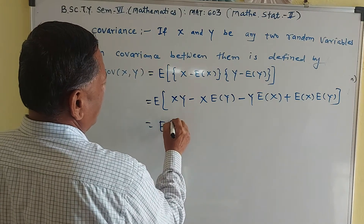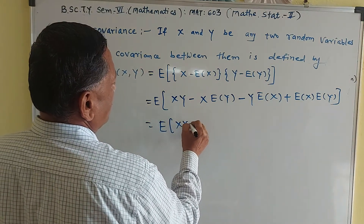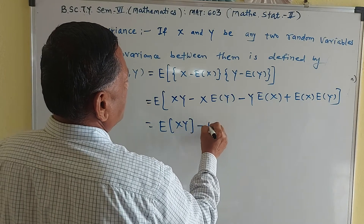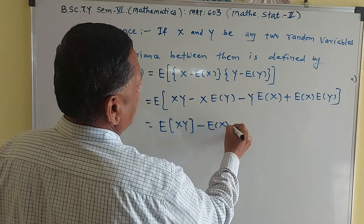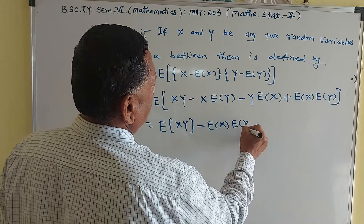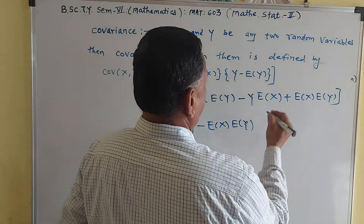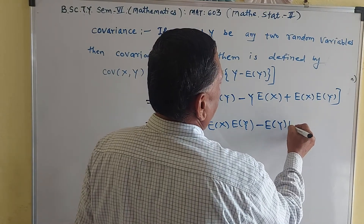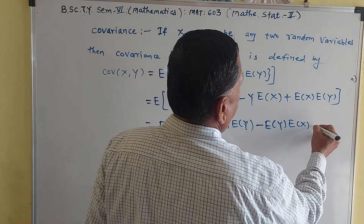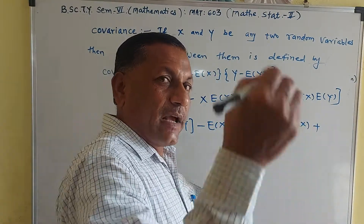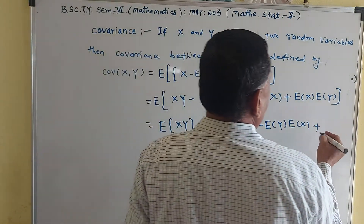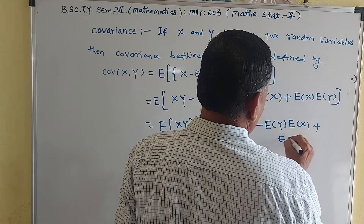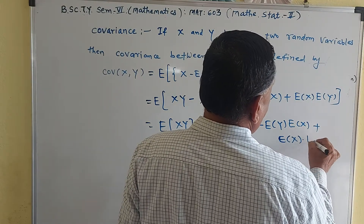So this can be written as: expectation of XY, minus E[X] times E[Y], minus E[Y] times E[X]. You know the properties of expectation — expectation of a constant times itself is just that constant — plus E[X] times E[Y].